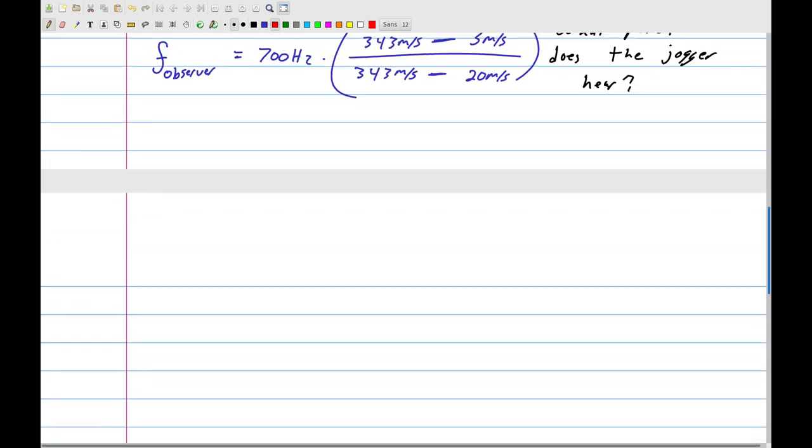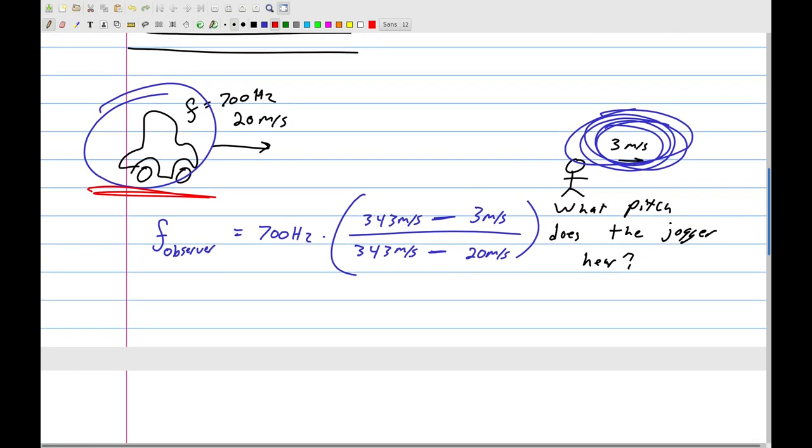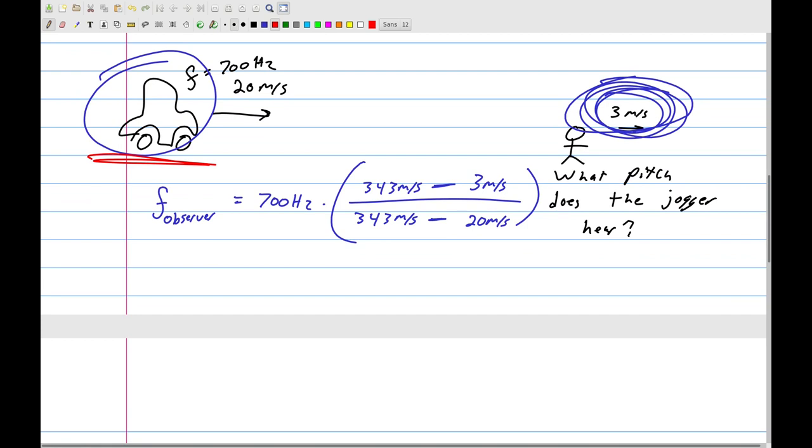So now all we need to do is grab our calculator and check what this evaluates to. By the way, when you're typing this in your calculator, please be very careful. Because if you don't have one of the fancy TI inspires, you're going to need a couple sets of parentheses. Actually, three sets. One, you can see, is already there. That's the outer set. But we also need a set to hold together the numerator and a set of parentheses to hold together the denominator.